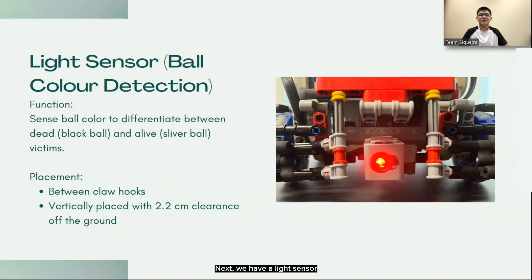Next, we have a light sensor to detect the color of victims in the evacuation zone. The light sensor is also set to HSV mode and placed between the claw system for easy detection of the balls before they are collected. It has a 2.2cm vertical clearance off the ground to ensure reliable detection of the victims while maintaining ground clearance.